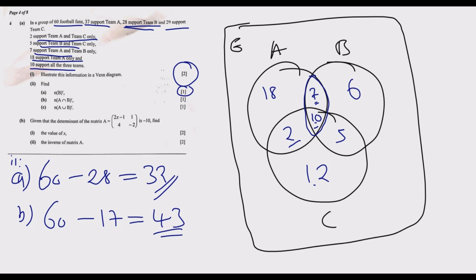Part (iii): find (A∪B) complement — fans not found in A union B, meaning those who don't support either A or B. When we combine A and B, the only region outside is the C-only region, which is 12. Alternatively, adding 5 plus 6 plus 7 plus 10 plus 2 plus 18 gives 48, and 60 minus 48 equals 12. So the answer is 12, earning five marks for Question 4.